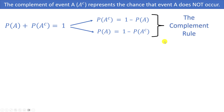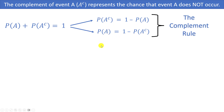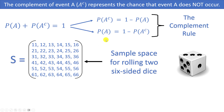Often it's much easier to find a probability using the complement rule rather than directly. If P(A) seems difficult to calculate but the complement is straightforward, you can find P(A^c) and then compute P(A) = 1 − P(A^c).